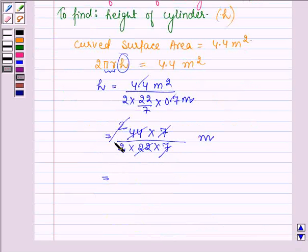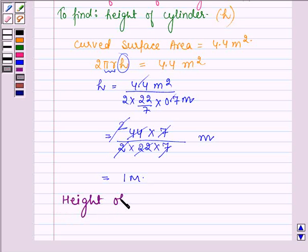44 ÷ 44 = 1 meter. Thus, the height of the cylinder is 1 meter.